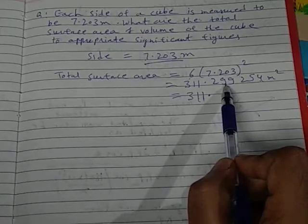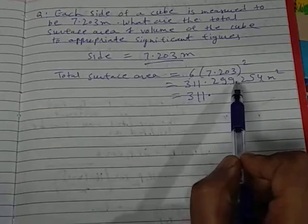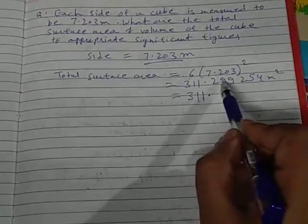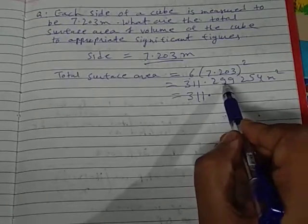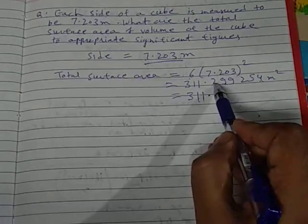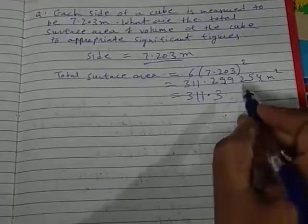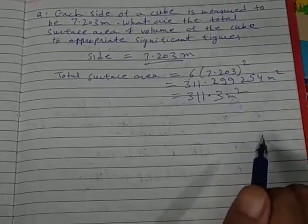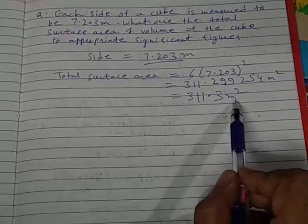You need to round off this value. When you round off, the next digit is 9, and 9 is greater than 5, so the preceding digit will be raised by 1 — so 2 becomes 3. Your answer will be 311.3 meter square.